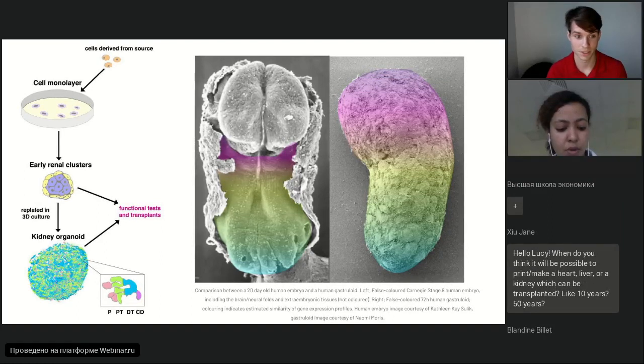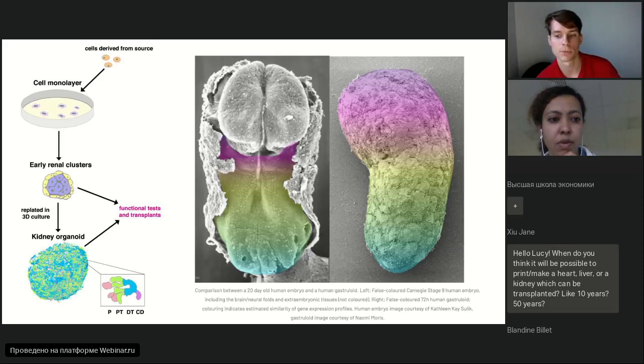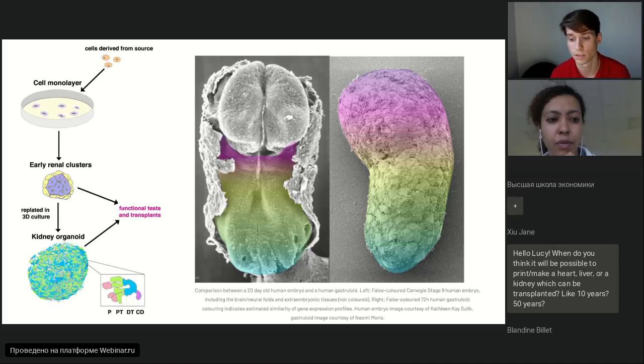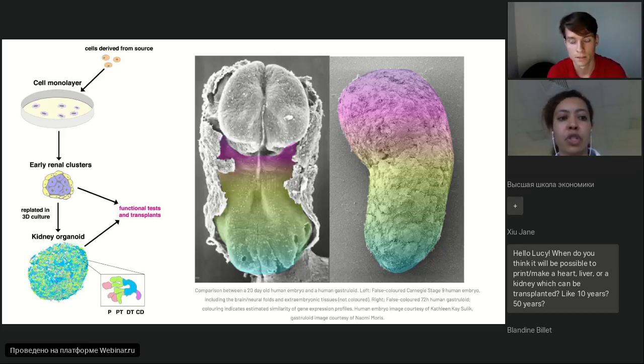Thank you, Lucy. This was very interesting. We have a question: when do you think it will be possible to print a heart, liver or kidney which can be transplanted to a human? Like, 10 years, 50 years? I think that with technologies we have nowadays, it's hard to print whole human organs. But I think we can combine technologies like biofabrication in incubators and printing to get results. But it will not be fully functional as we expect because they have very sophisticated organization.